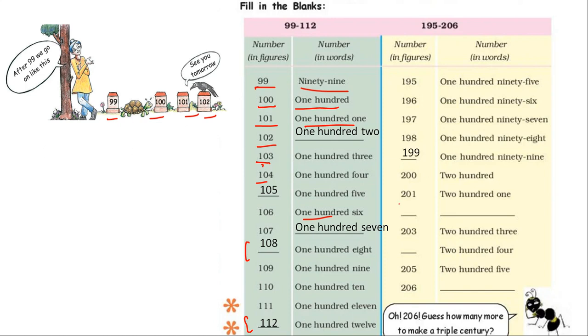Okay. 200, 201. In figures, what will we be writing? What comes after 201? After 201, 202 comes. And in words, we can write it as 202.